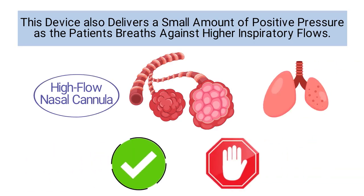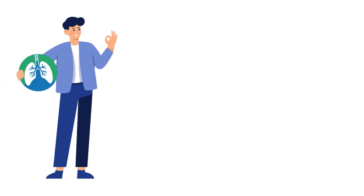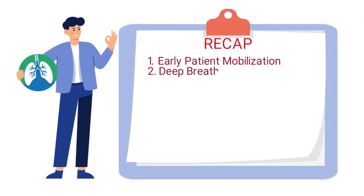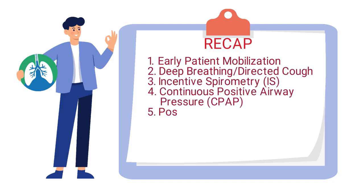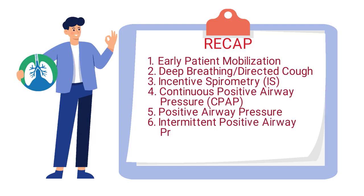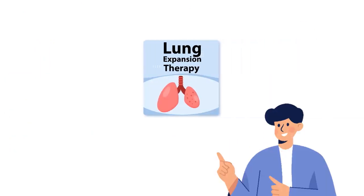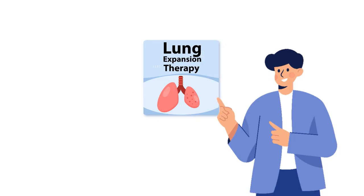So just to give a quick recap, the most effective types of lung expansion therapy include early patient mobilization, deep breathing and directed cough, incentive spirometry, CPAP, positive airway pressure therapy, IPPB, and the use of a high flow nasal cannula. Lung expansion therapy is a very important topic, which is why you must develop an understanding of the different types.